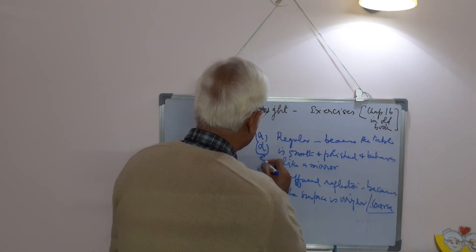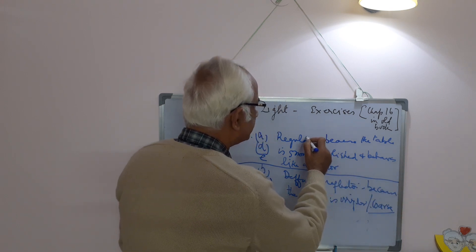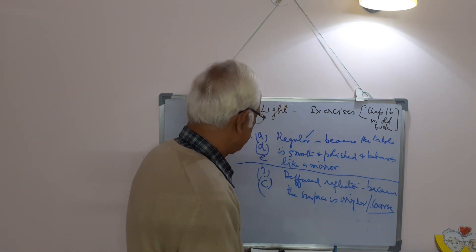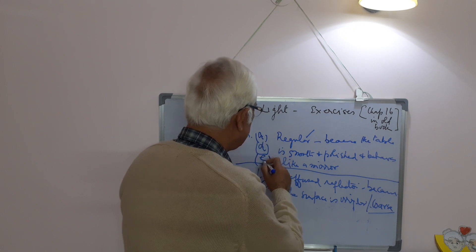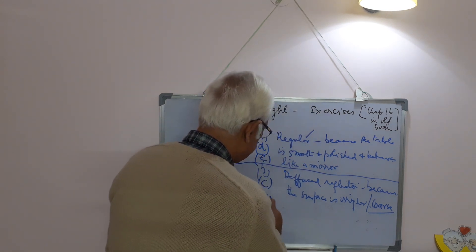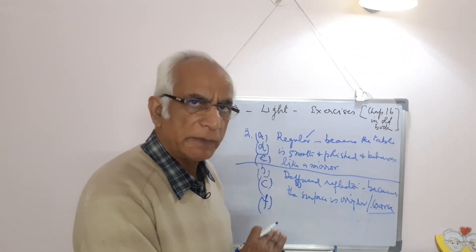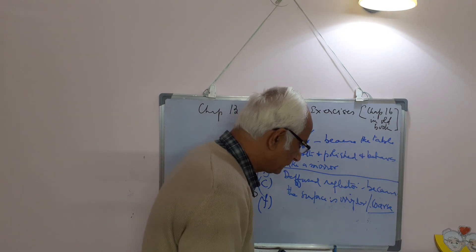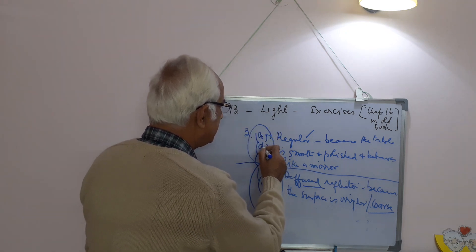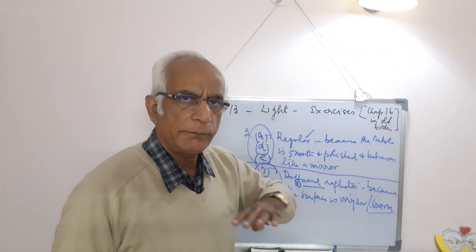E) Mirror — of course, a mirror gives regular reflection because the surface is smooth and polished. So A, D, and E give regular reflection because the surface is smooth and polished and behaves like a mirror. B and C give irregular or diffused reflection because their surfaces are coarse and irregular. Paper also gives irregular reflection because the surface of paper is not smooth and does not behave like a mirror. In these three cases — A, D, E — it will be regular reflection; in B and C, it will be diffused.